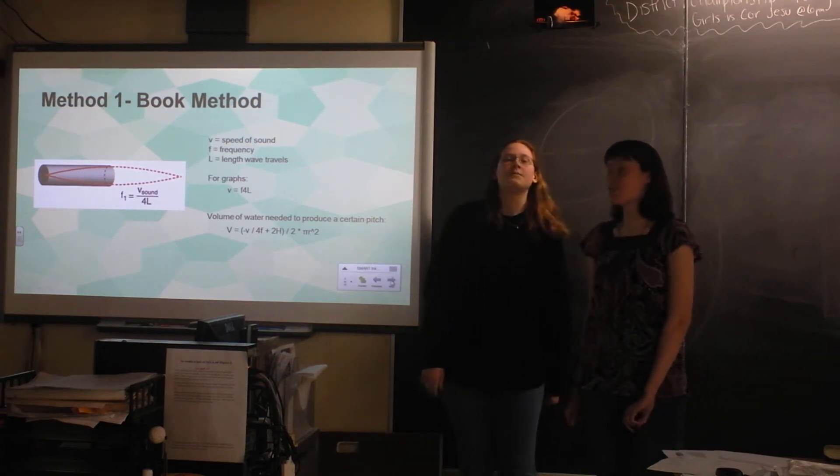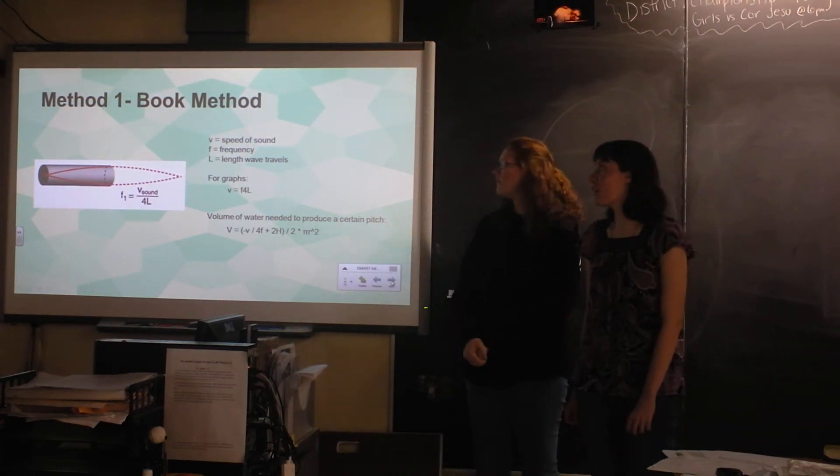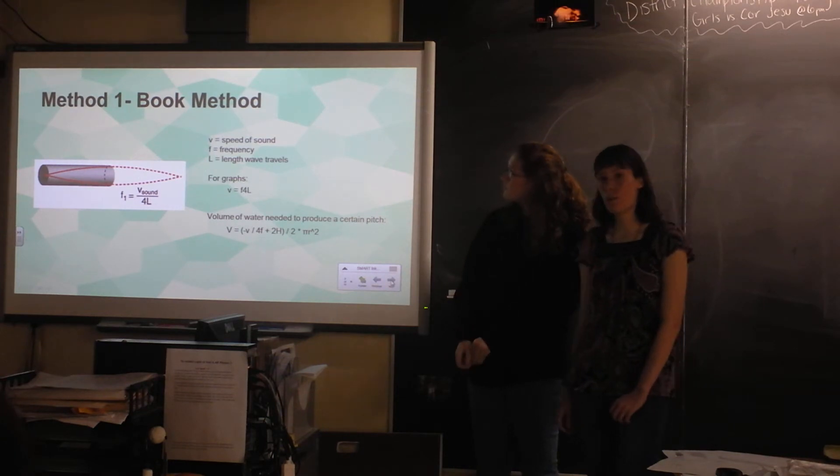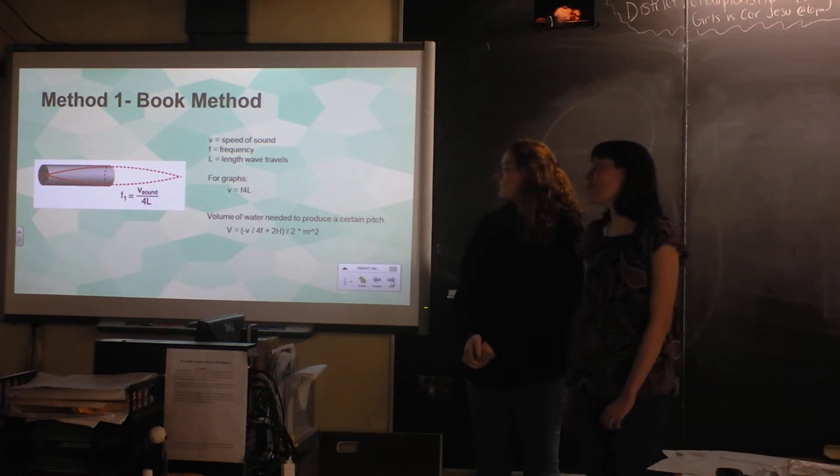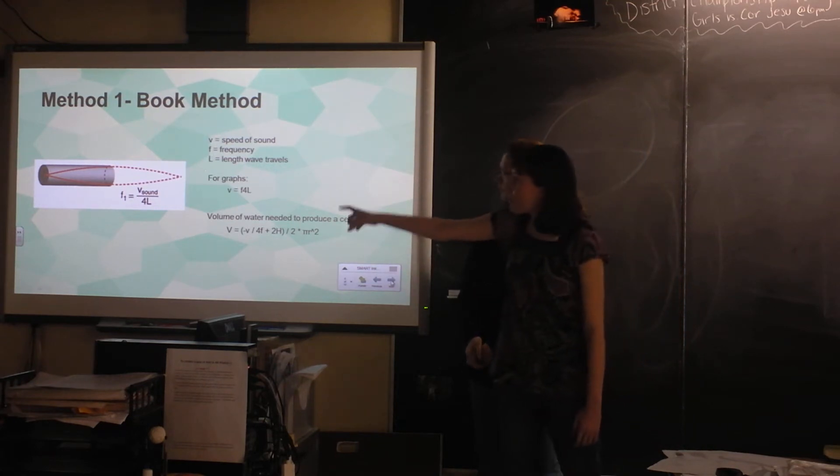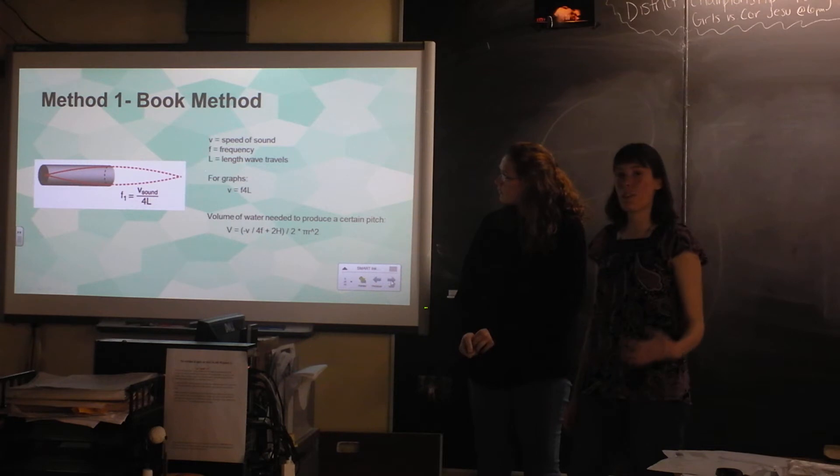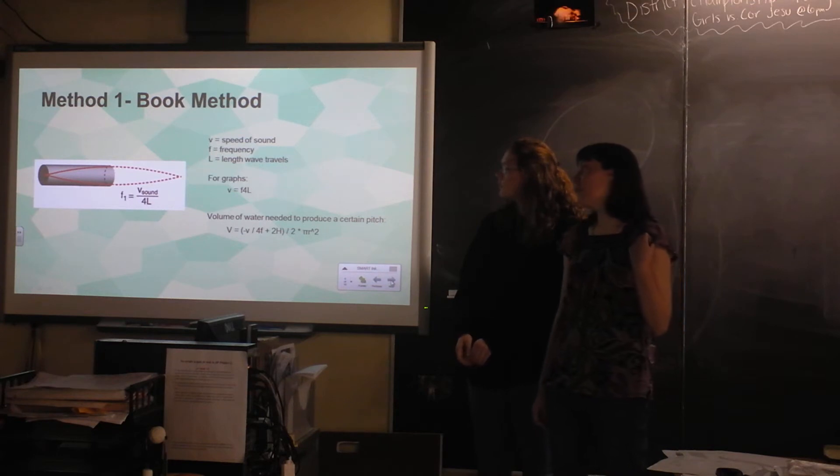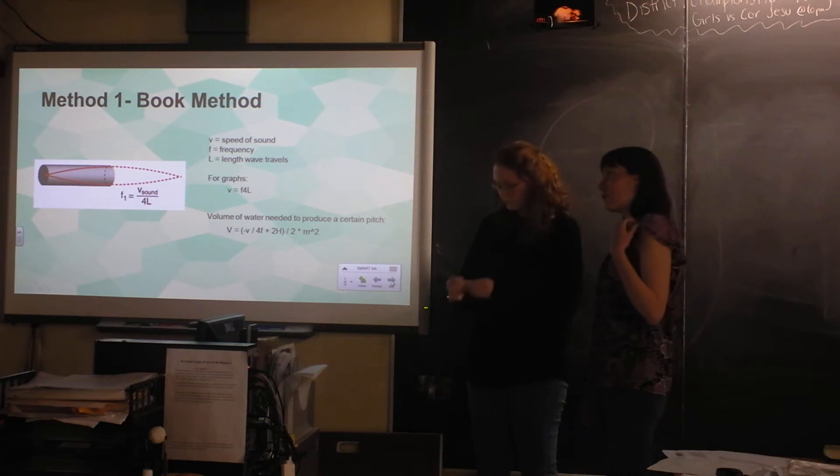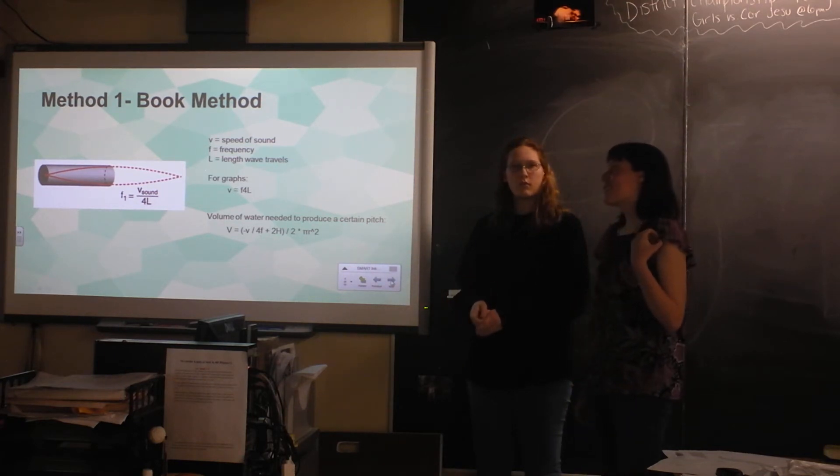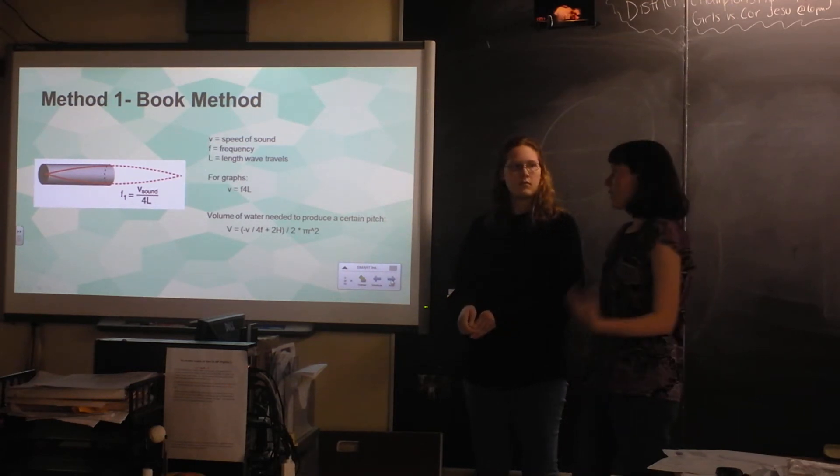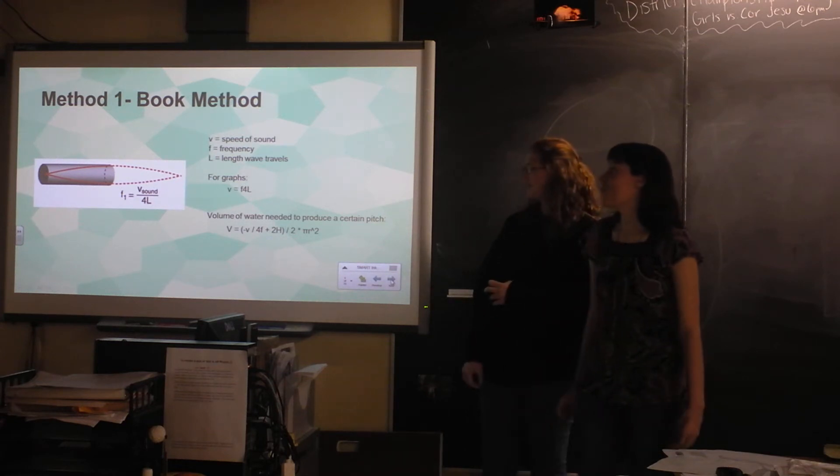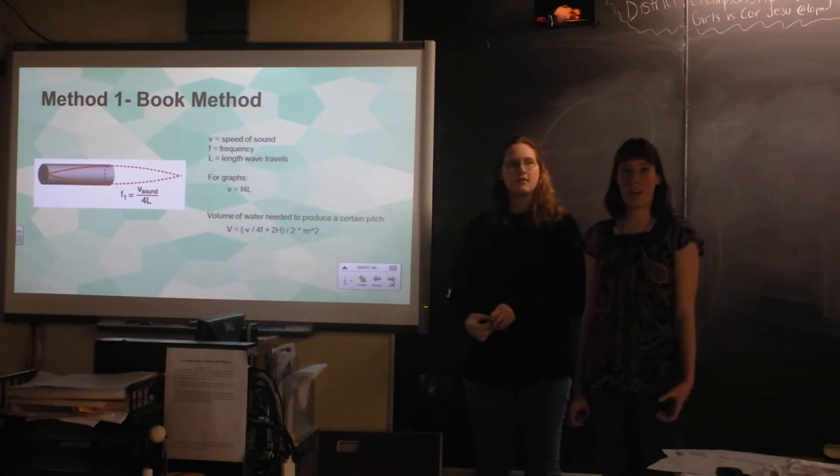So the method one was the book method from the Walker physics textbook. And it used harmonics. So the first harmonic in a closed tube looks like that picture. One fourth of the wave is in the tube. And that gives the resonant frequency of the bottle. And so it works like the equation velocity equals frequency times wavelength. Because the wavelength is just four times the length of the bottle. So when you do velocity equals frequency times four L, it's that same equation.